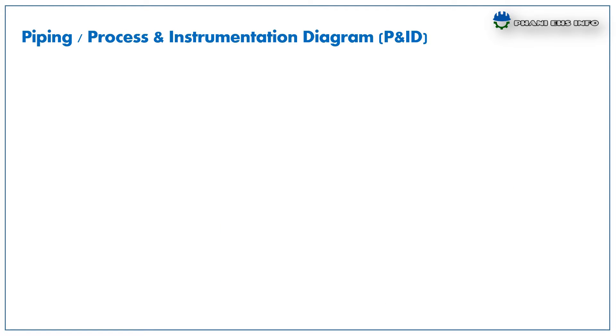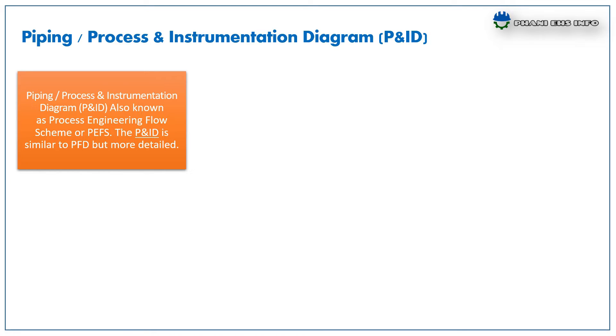P&ID piping or process and instrumentation diagram also known as process engineering flow scheme or PEFS. The P&ID is similar to PFD but more detailed.